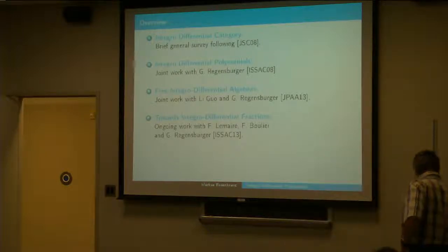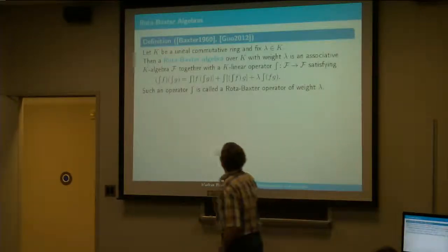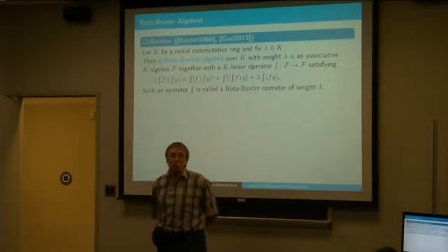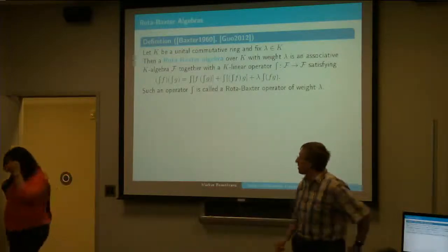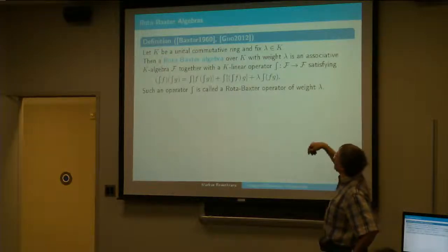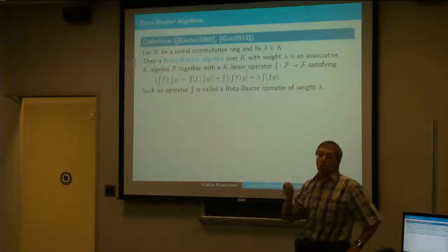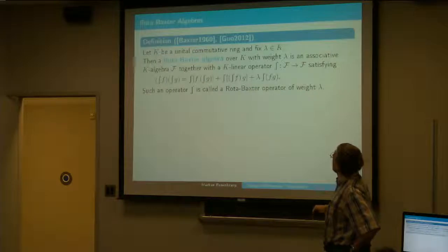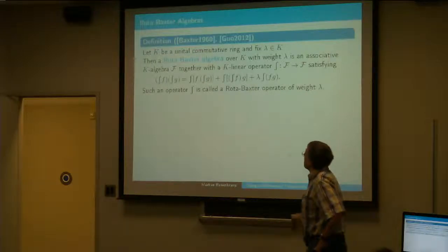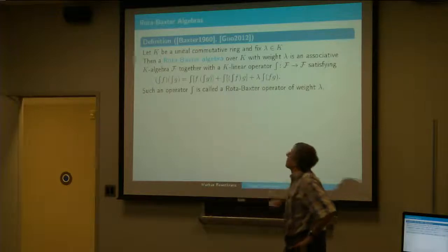Okay, so let me start with the first part, the category of integral differential algebras. I just start with the simpler version of what is called the Rota-Baxter algebra. So a Rota-Baxter algebra is the counterpart of a differential algebra, but it has only a notion of integration, no notion of differentiation. And the analog of the Leibniz axiom is this axiom here, which is called the Rota-Baxter axiom.